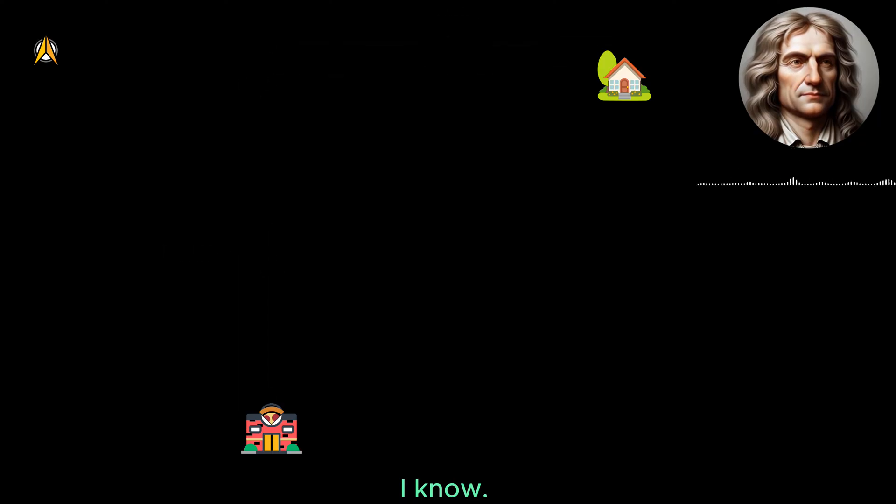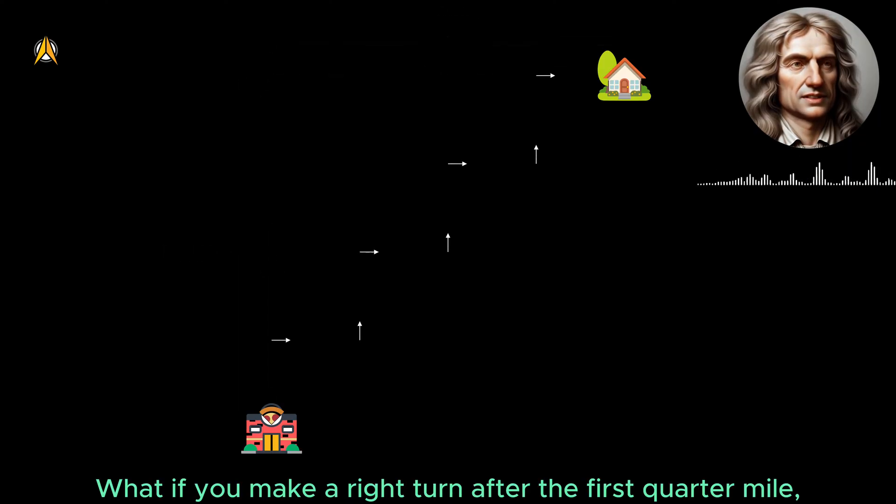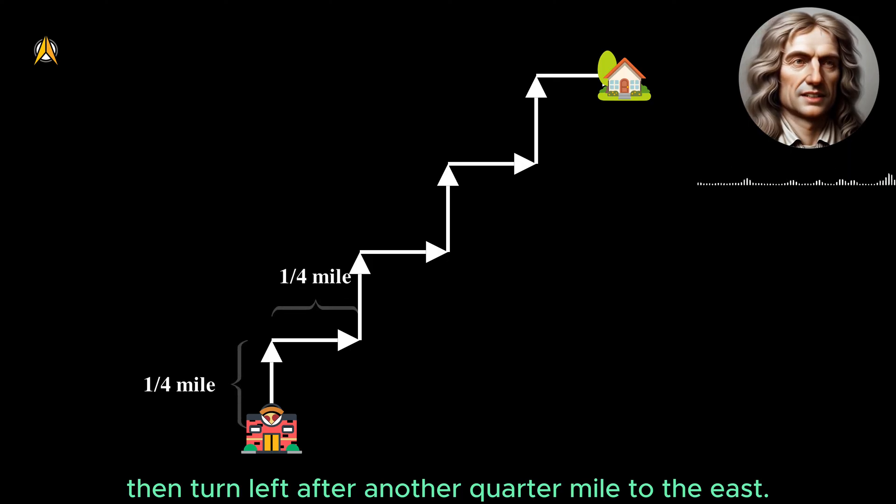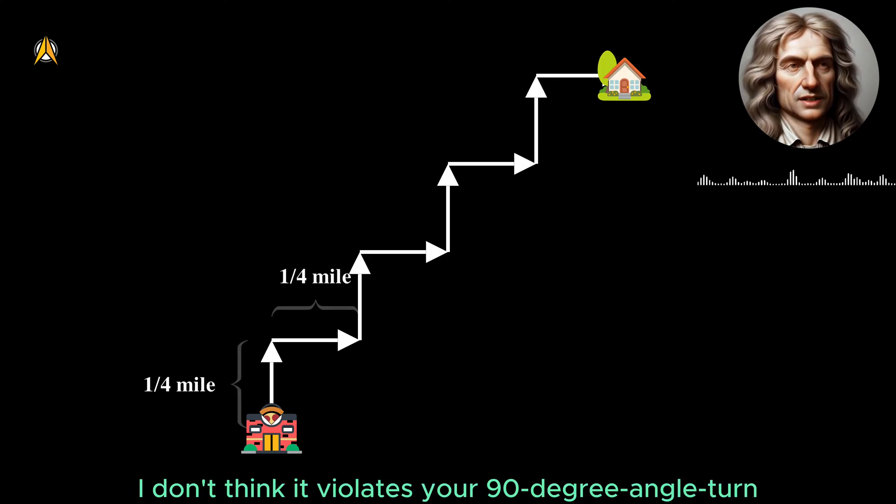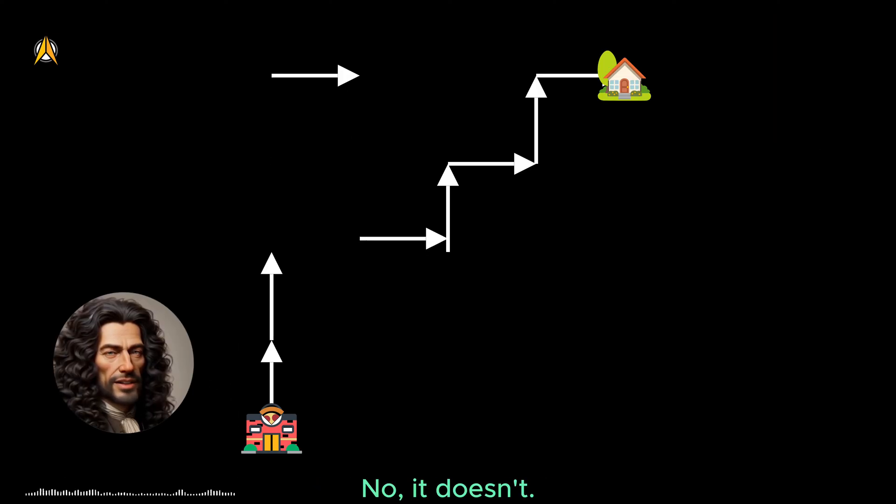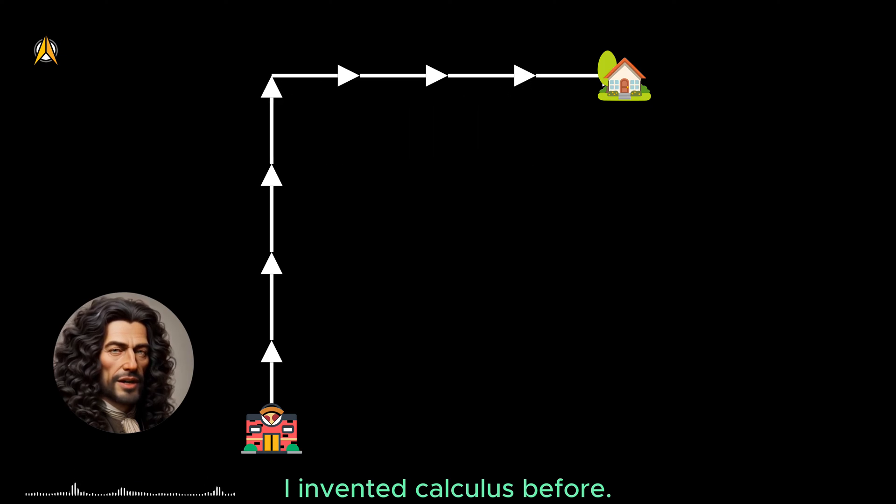I know, what if you make a right turn after the first quarter mile, then turn left after another quarter mile to the east. I don't think it violates your 90 degree angle turn German rule, right? No, it doesn't. But you know I invented calculus before. You can't play with me on this.